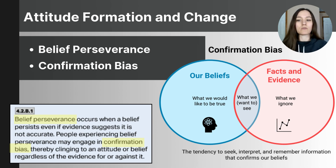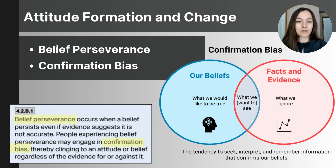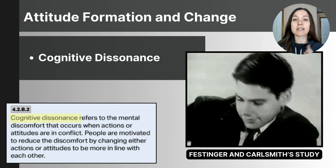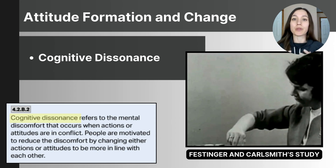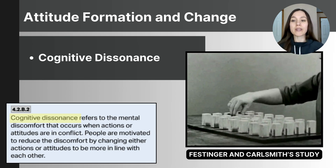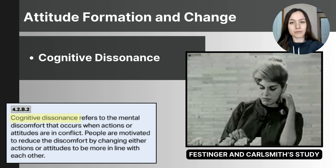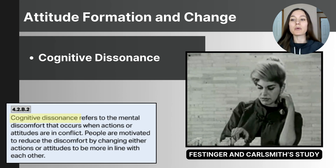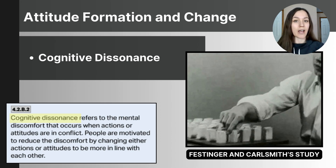This showed belief perseverance — when people stick to their beliefs, even distorting information to make it fit what they already believed. Our final concept is cognitive dissonance, which is the psychological discomfort people feel when they hold two conflicting beliefs or act in a way that contradicts their beliefs. To reduce this discomfort, people will often try to either change their beliefs, justify their actions, or minimize the importance of the conflict altogether.